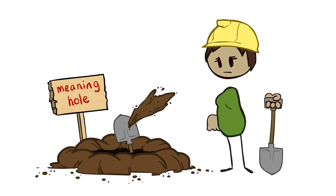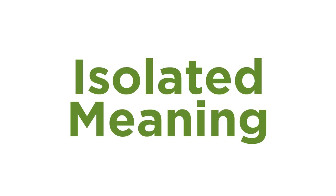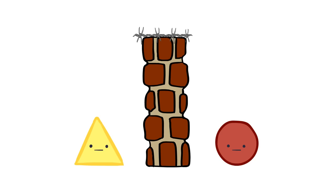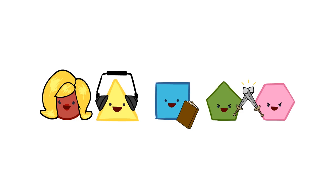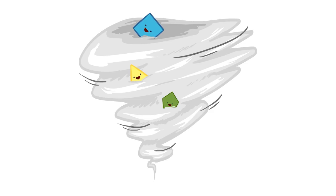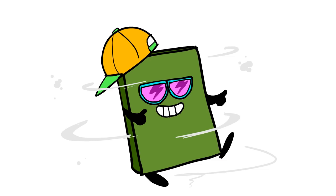Starting from the top and working our way down, let's begin with isolated meaning. This describes what each element of a game means in isolation — the elements that are going to inform the player's first impression of a game. Every superficial component — the color palette, musical style, narrative premise, and gameplay features — each lends a certain energy and flavor to the work. And these elements can combine to create radically different impressions.